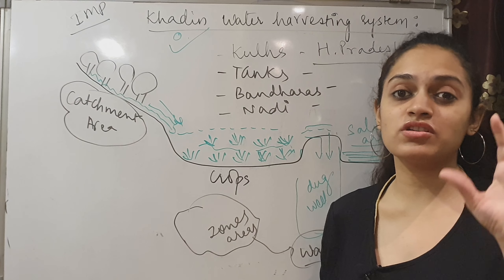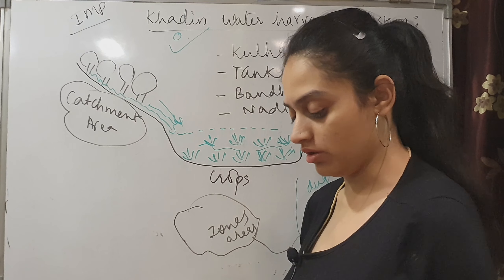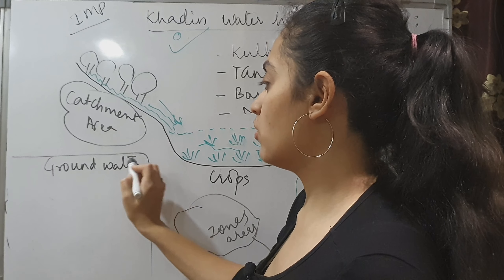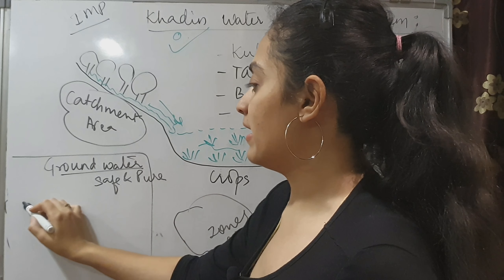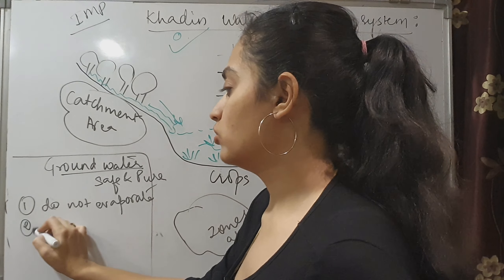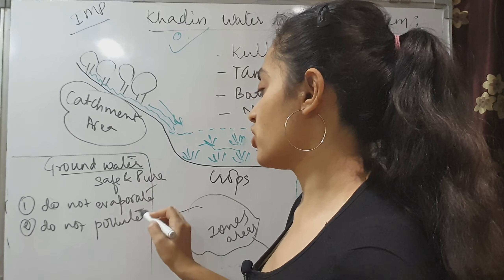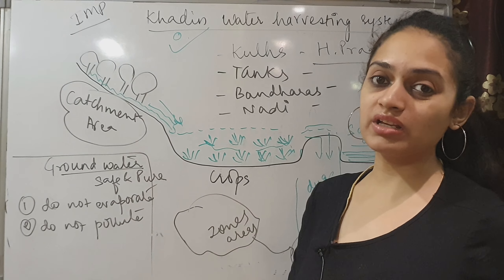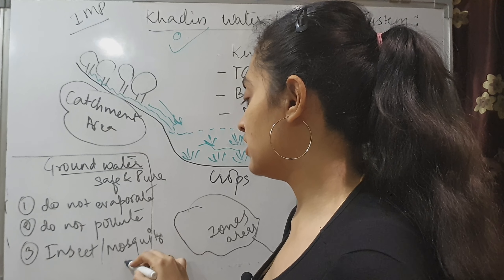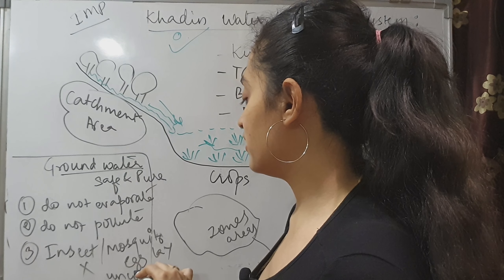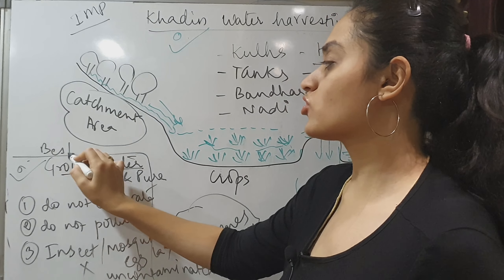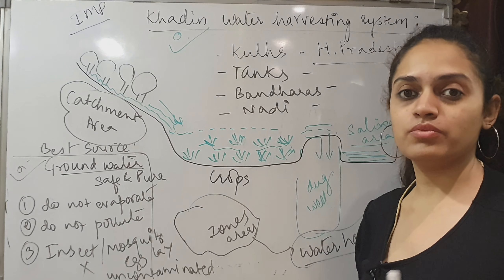The best way to store water is as groundwater. If you are doing rainwater harvesting, put all the water into the ground. Groundwater is the most safe and pure form of water storage. First, groundwater doesn't evaporate — water stored in tanks or dams will evaporate. Second, it will never get polluted, because pollution happens above ground and humans cause pollution above ground. Third, there are no insects or mosquitoes, so the water remains uncontaminated.